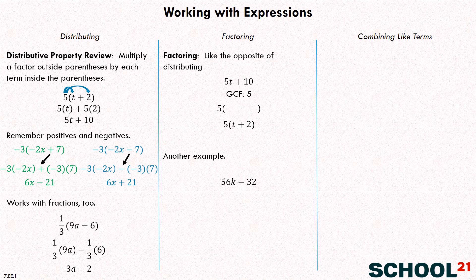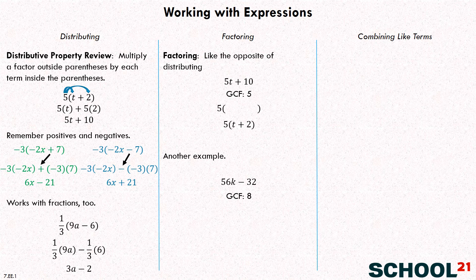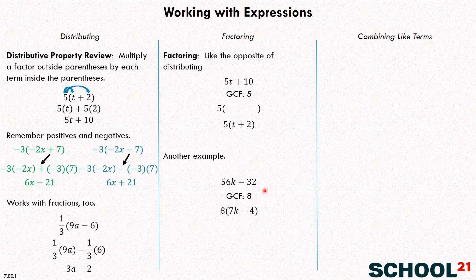Let's do another example: 56K minus 32. What's the first step when factoring? Find the greatest common factor. What's the GCF of 56K and 32? Eight — you could say two or four, but eight is the greatest. So we factor out eight: 56K divided by eight is 7K, and 32 divided by eight is four. So we get eight times the quantity 7K minus four. We can verify with the distributive property: eight times 7K is 56K, and eight times negative four is negative 32.